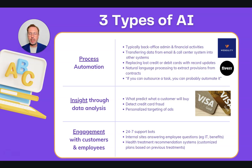The first cluster is process automation, typically covering back office admin and financial activities. For example, I work for a software company in San Francisco called Webgility, and what we did was automate the transfer of information from one system into another — from Amazon, from Shopify, into QuickBooks, into inventory systems. You can also transfer data from email and call center systems into CRMs.